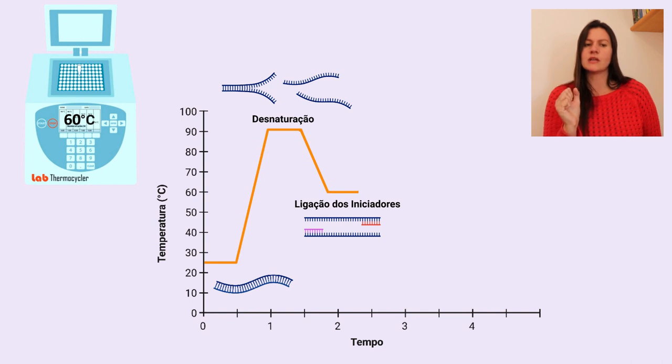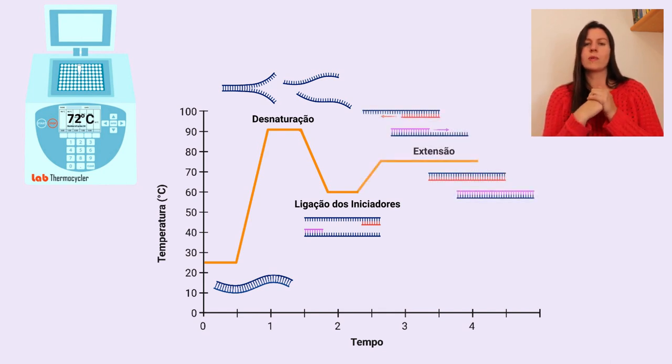Após essa etapa de ligação, a temperatura então é alterada para o melhor funcionamento da DNA polimerase, começar a adicionar os nucleotídeos por complementariedade à fita molde, sempre no sentido 5' a 3'. Normalmente, se utiliza a temperatura de 72 graus nessa etapa.